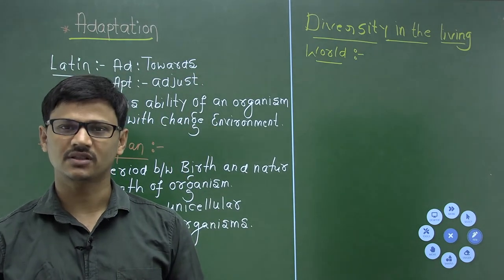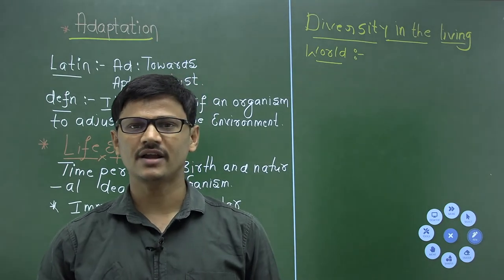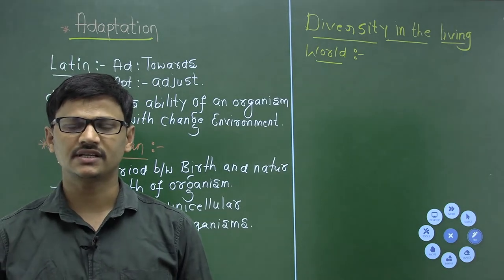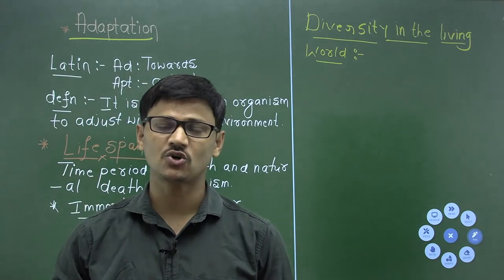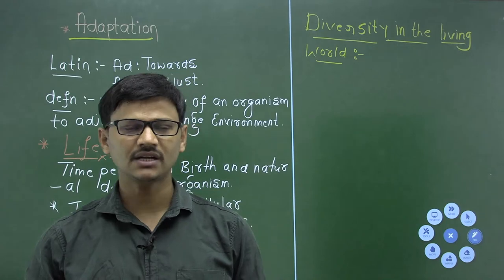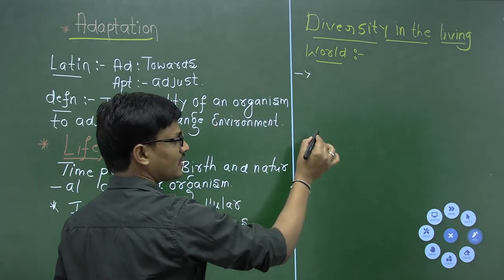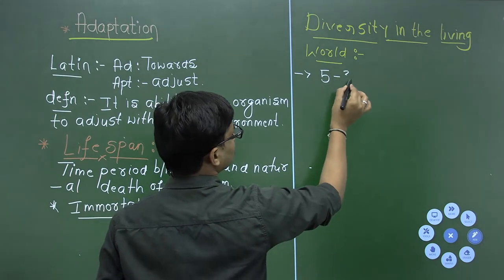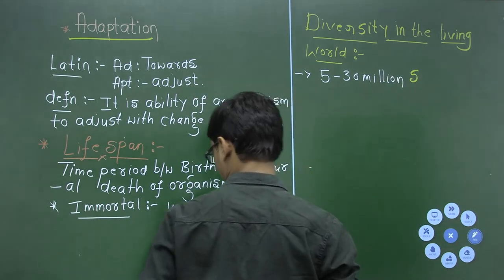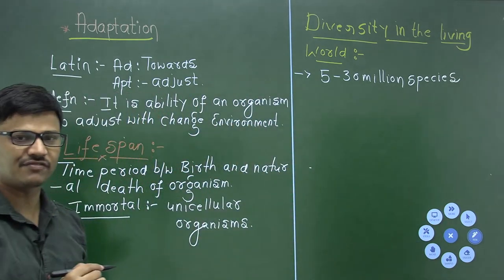By considering this, many scientists tried to estimate the total number of species on earth. Unfortunately, nobody has given an exact number, but the approximate number scientists believe is around 5 to 30 million species present on the earth.